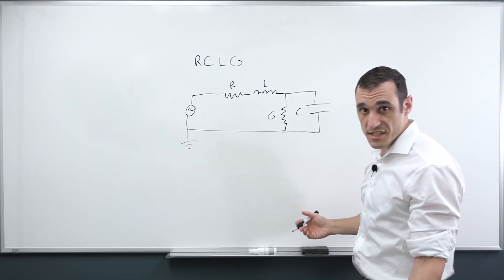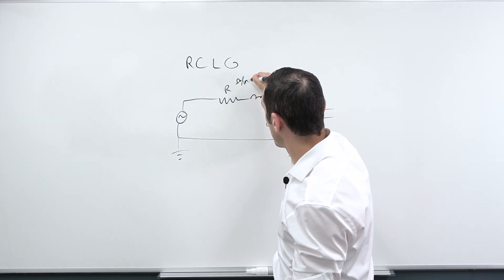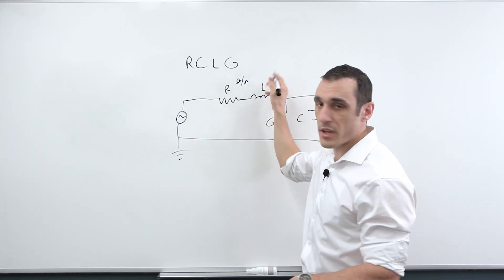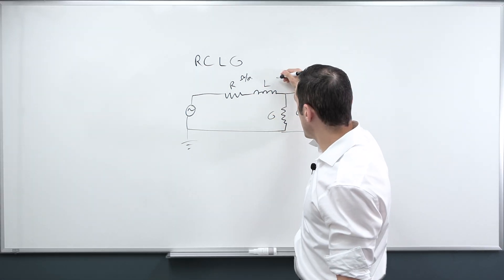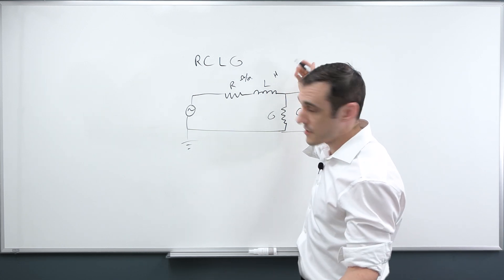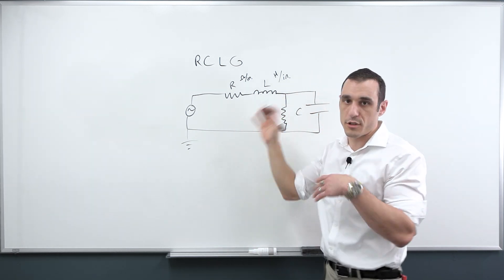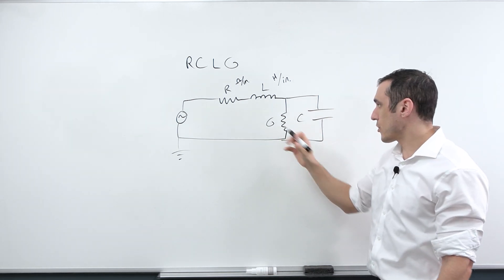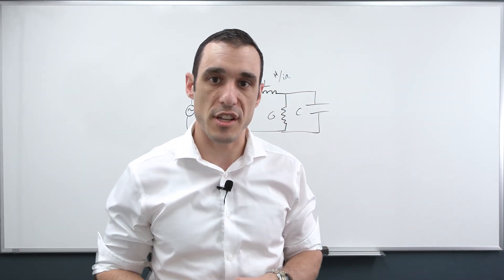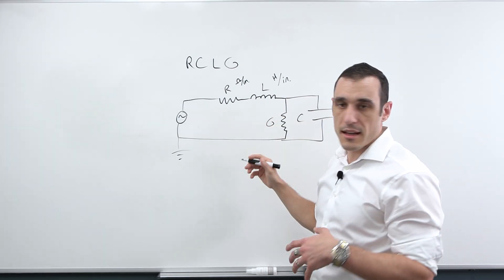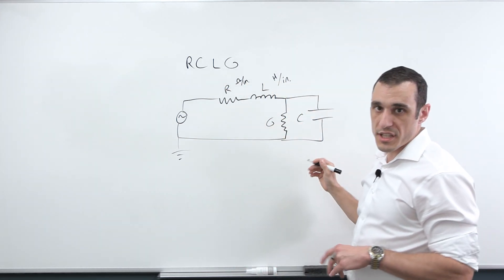Pretty simple, right? Really what you have here is that these are defined in terms of ohms per inch or ohms per meter or ohms per millimeter or whatever unit of distance you want to work in. The point is that they're defined per unit distance. Same thing here with my inductance. My inductance is defined in Henry's per inch or per millimeter or whatever unit of distance you're working in. And then we also have per unit distance values for G and C.